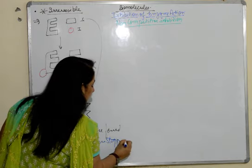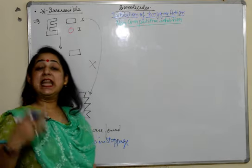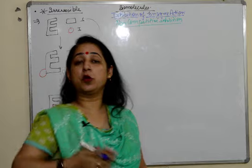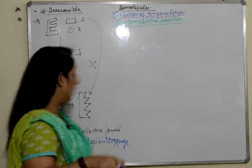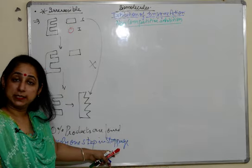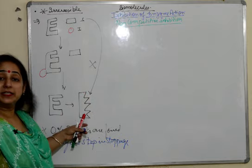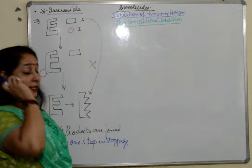In competitive inhibition we saw that it takes multiple steps for complete stoppage to take place, but here it abruptly stops because the shape of enzyme has changed.